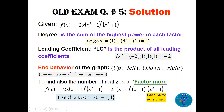The leading coefficient is minus 2 times 1 times 1 times 1 equals minus 2. So the end behavior is up to the left, down to the right — like minus x cubed. To find the real zeros we factor further using difference of two squares: (x minus 1)(x plus 1) each squared, while x squared plus 2 cannot be factored in real numbers. The three real zeros are 0, 1, and minus 1.